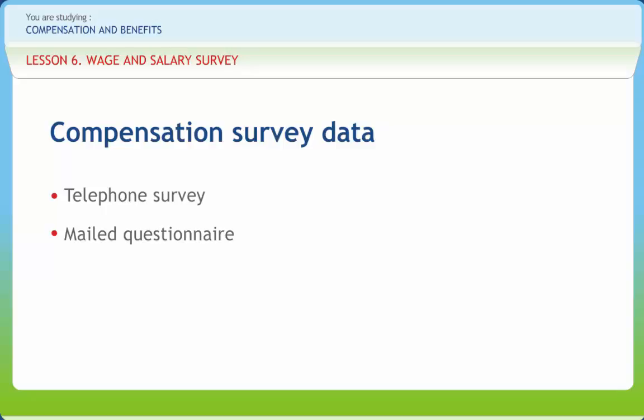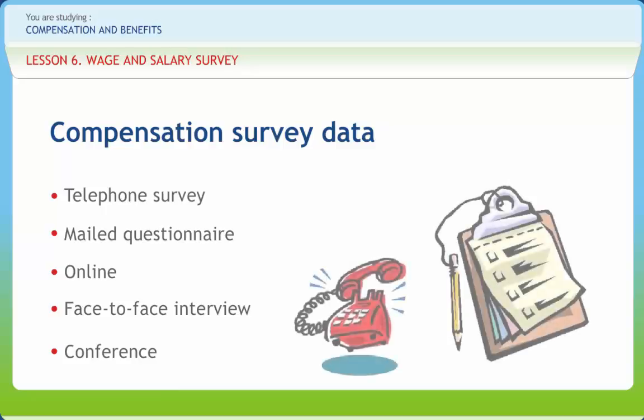A widely used source of pay data is the internet — anyone with a computer and internet access can obtain pay data online. Probably the best technique for collecting data is the completion of a questionnaire during a face-to-face interview. In the job matching process, the interviewer may review relevant organizational records, job descriptions, pay structures, organization charts, and possibly even observe a job in action. Although the conference is one of the least used techniques for collecting compensation data, it has certain strengths — it promotes closer understanding among those responsible for compensation management, greater awareness of business similarities and differences, and increased willingness to cooperate when interaction and data flow are vital.